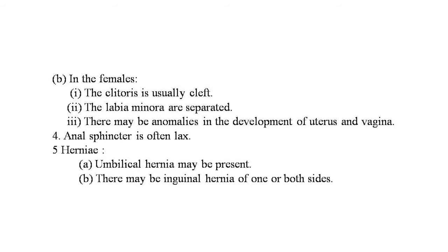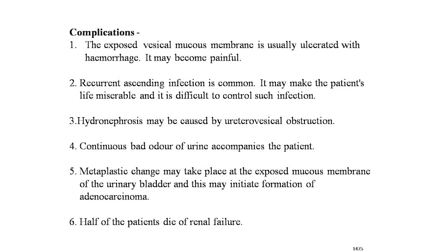The anal sphincter often lacks tone. Umbilical hernia and inguinal hernia on one or both sides may be present. Complications: the exposed vesical mucous membrane is usually ulcerated with hemorrhage and may become painful. Recurrent ascending infection is common and difficult to control. Hydronephrosis may be caused by ureteral obstruction. Metaplastic changes may take place at the exposed mucous membrane, potentially initiating formation of adenocarcinoma. Half of the patients die due to renal failure.